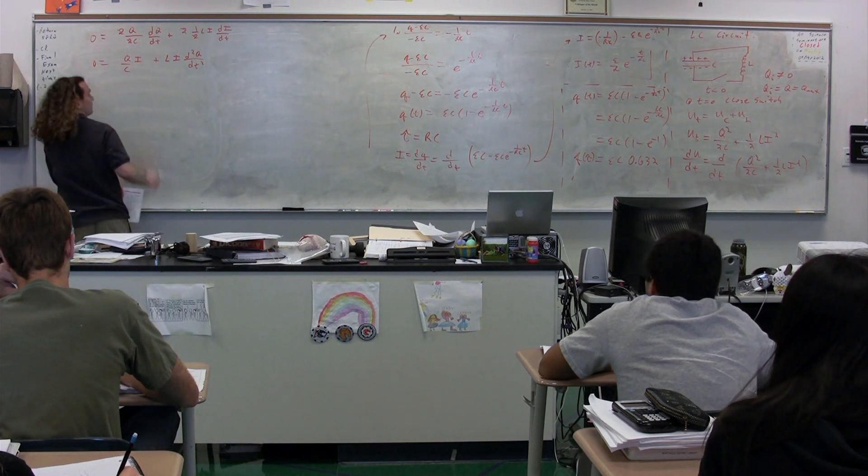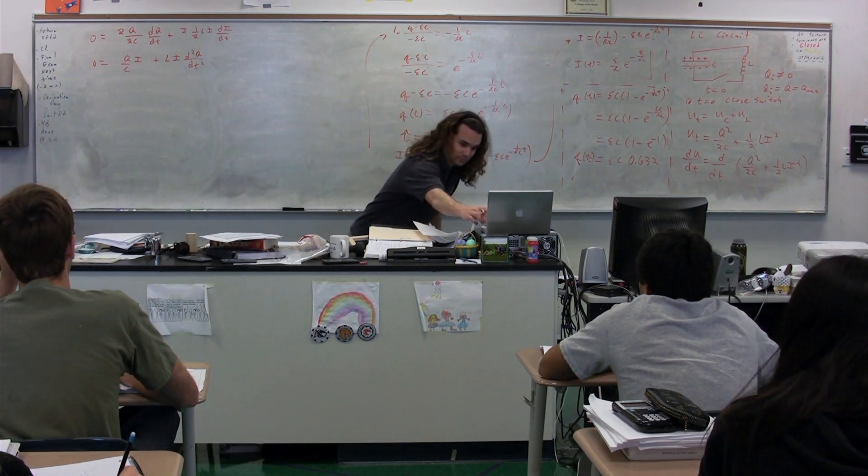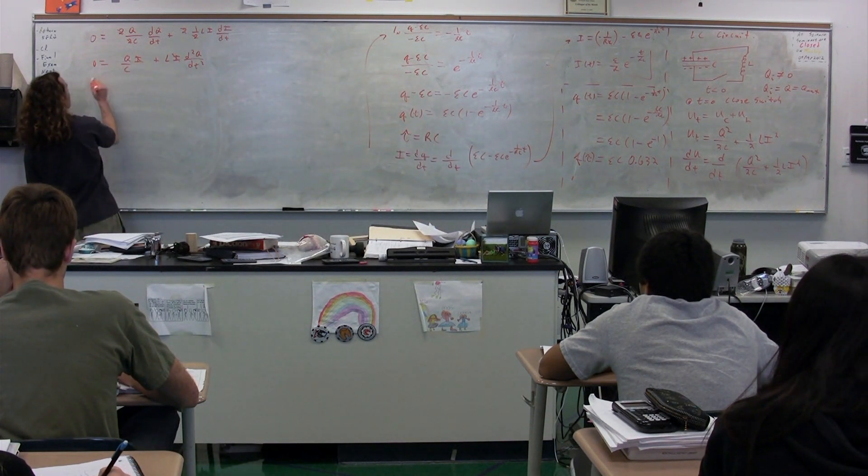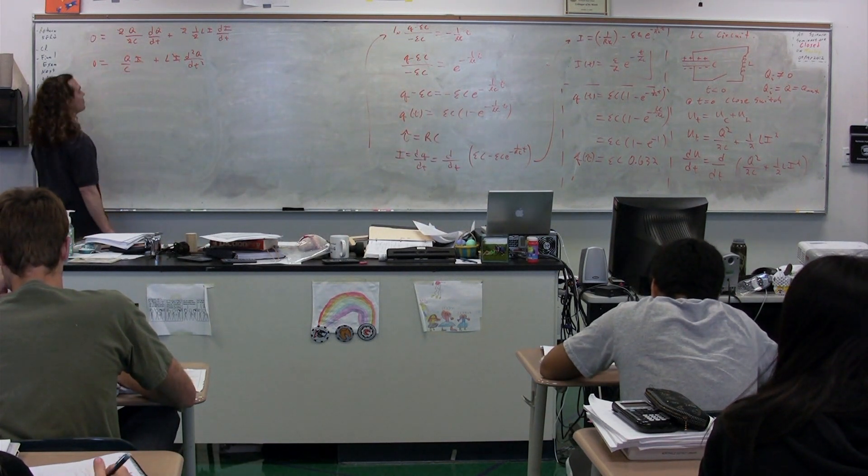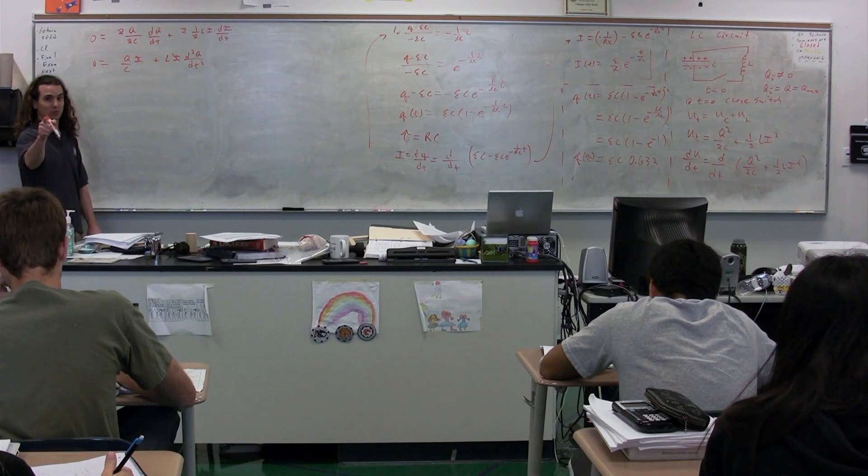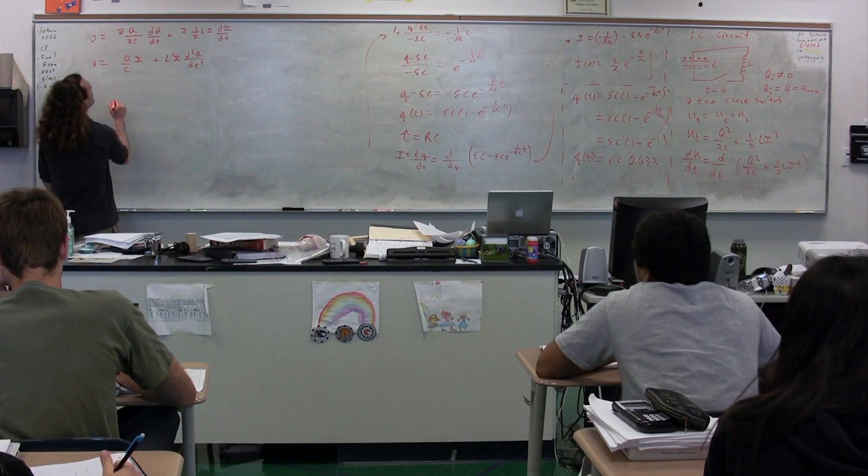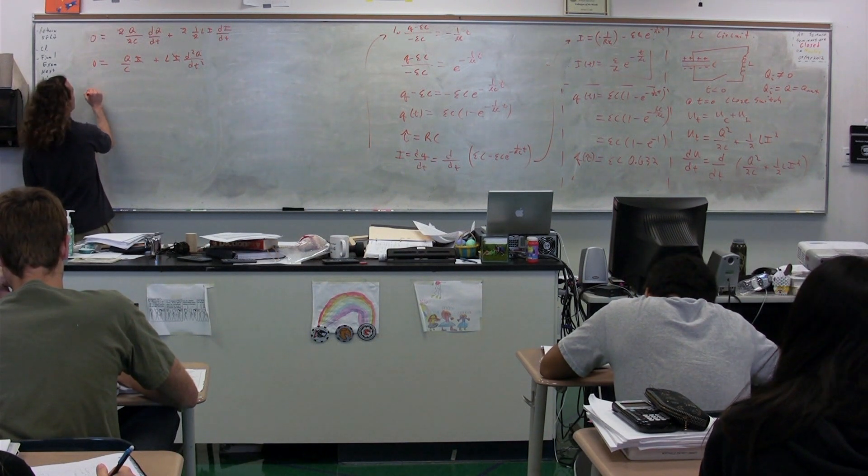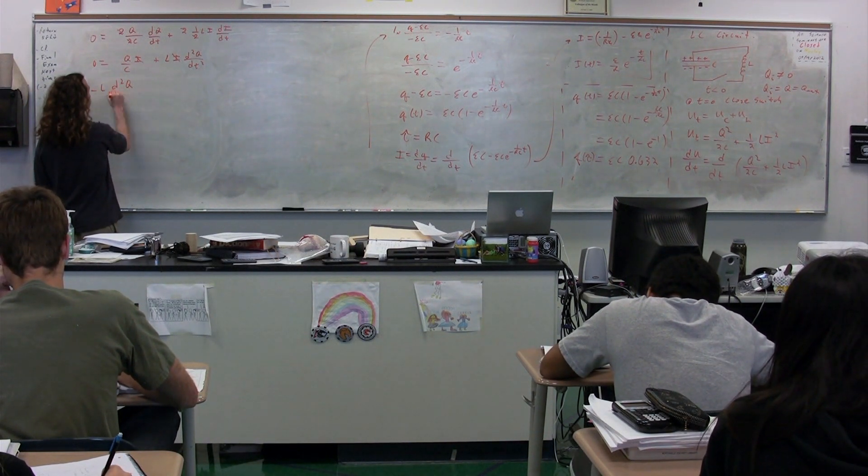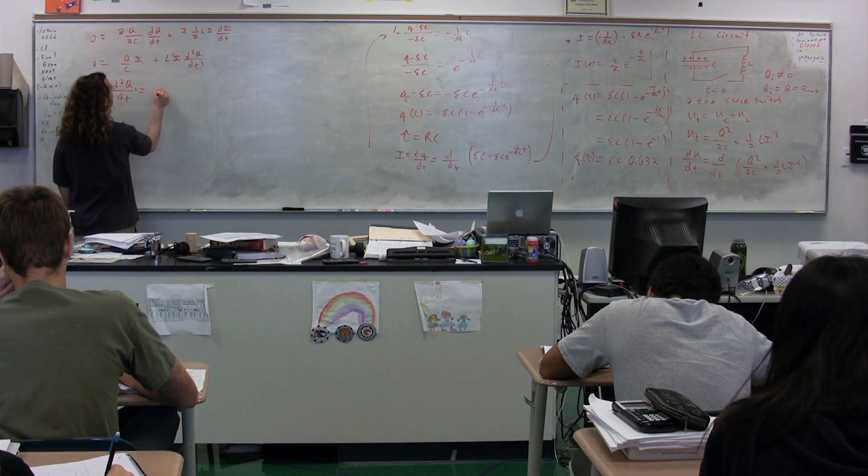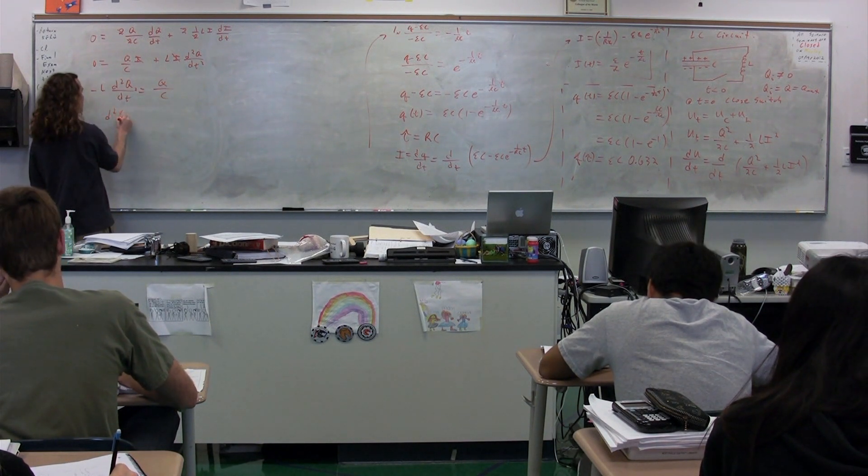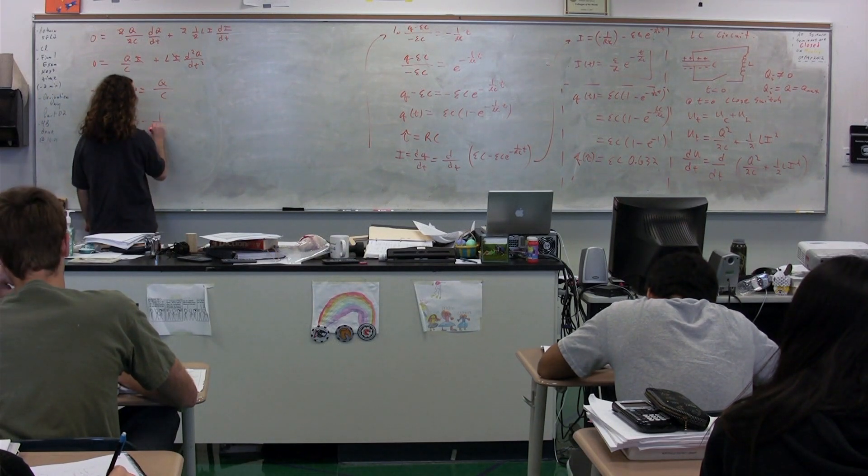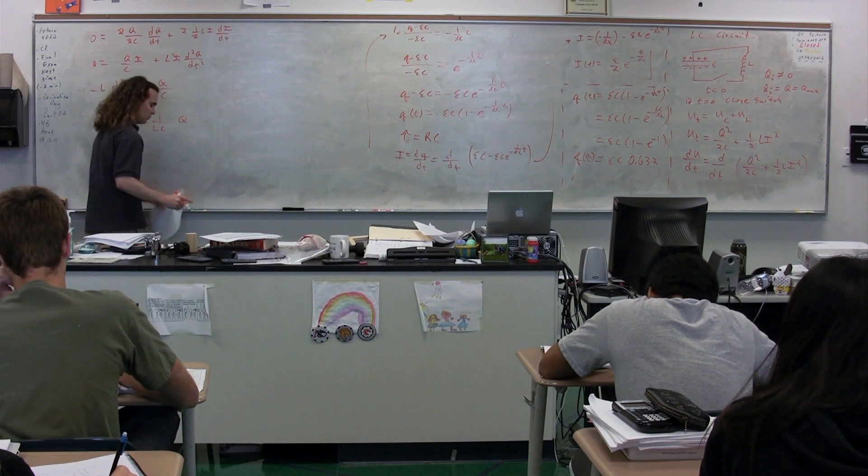So everyone brought current to the party. Which makes sense. The negative L second derivative of charge as a function of time is equal to Q over C. Therefore, the second derivative of charge as a function of time is equal to negative 1 over LC times Q.